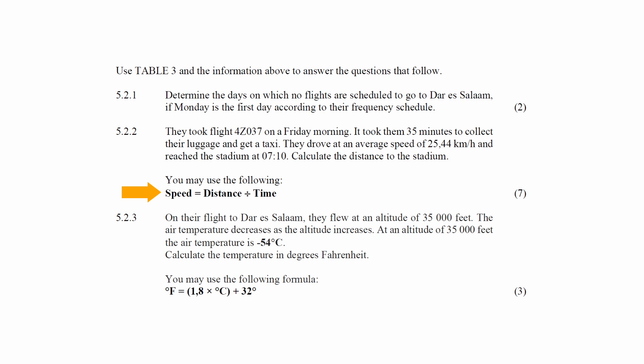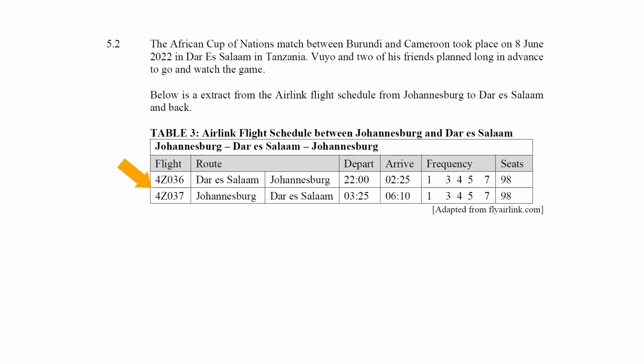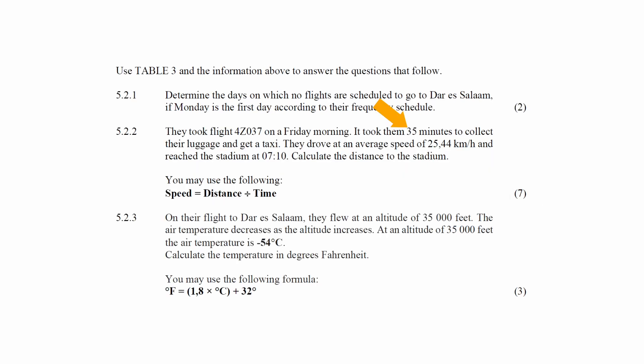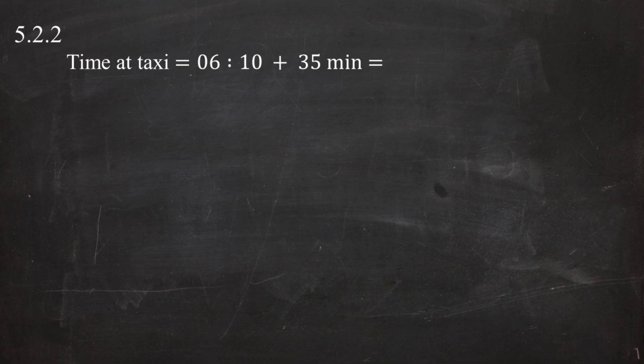To solve this problem, we first calculate the time it took to drive from the airport to the stadium. Flight 4Z037 arrives at 10 past 6 in the morning. Adding 35 minutes for luggage collection and getting a taxi gives a taxi departure time of 6:45 in the morning. Since they arrived at the stadium at 10 past 7, the drive duration is 10 past 7 minus quarter to 7, giving us 25 minutes of drive time.